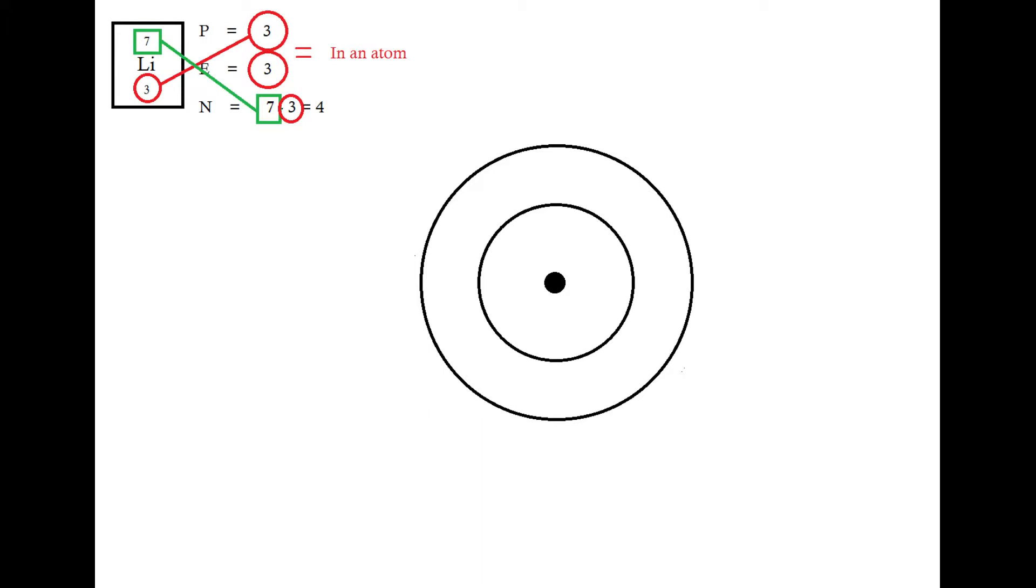Now of those three numbers, there's only one that we're actually interested in. It's quite a good habit to get into writing out p-e-n for every atom, but we're only actually interested in the number of electrons, because they're the ones that are going to move around during chemical bonding and lead to the formation of an ion. For the other parts of the atom, we're just going to draw the nucleus and not worry about being any more specific about what's in it.